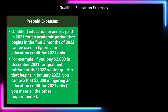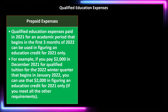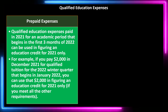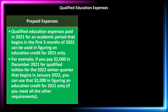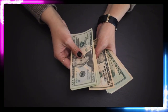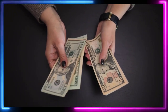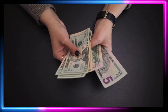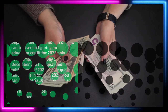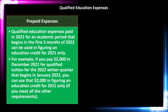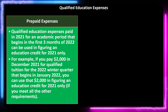Regarding prepaid expenses: qualified education expenses paid in 2021 for an academic period that begins in the first three months of 2022 can be used to figure an education credit for 2021. For example, you might pay for the first semester of 2022 in December 2021. The question is whether to apply that to 2021 or 2022 — typically you apply it to 2021 if paid in 2021, and you'd expect the school's documentation to reflect this.